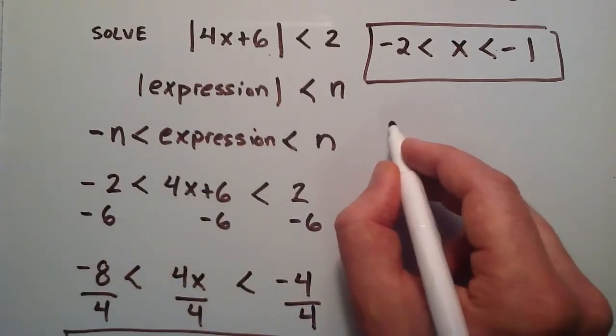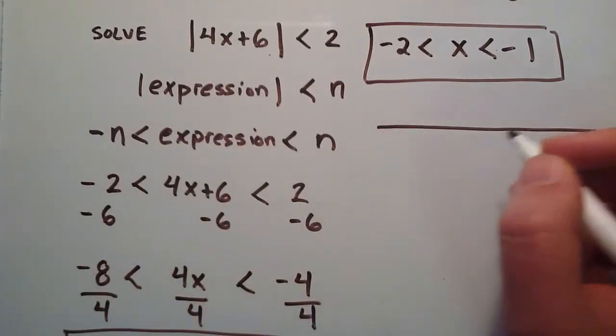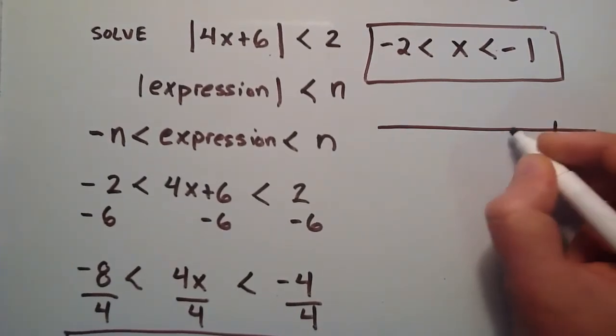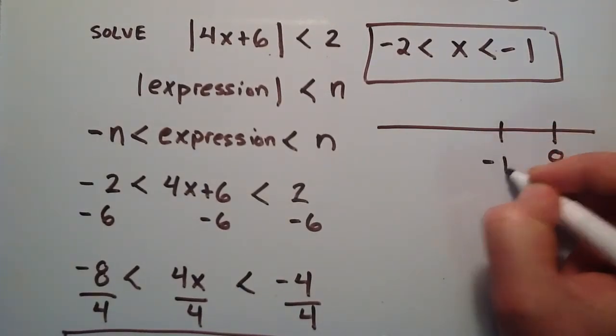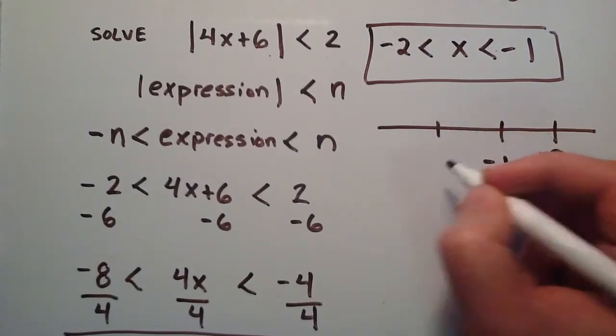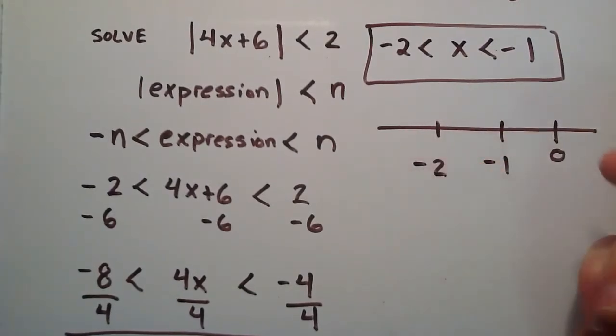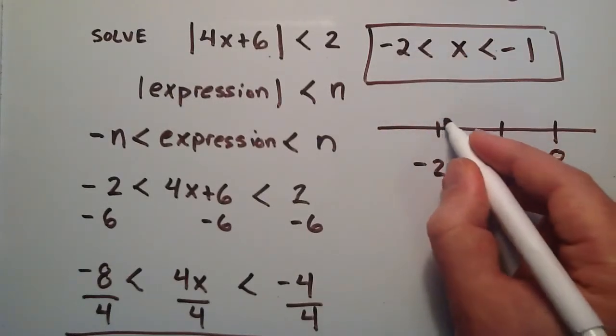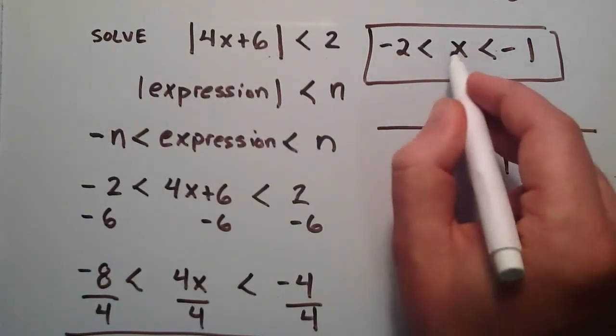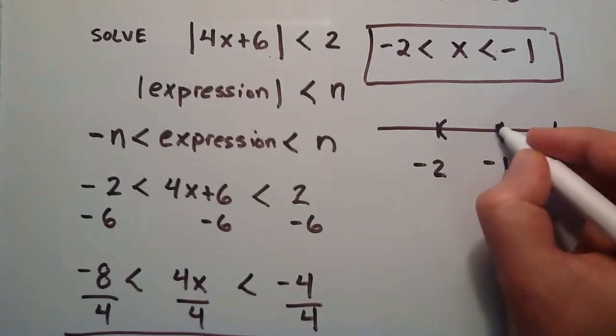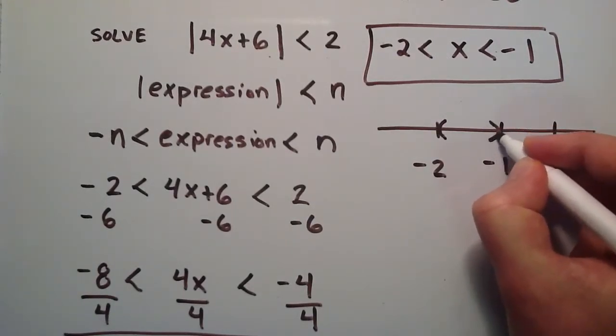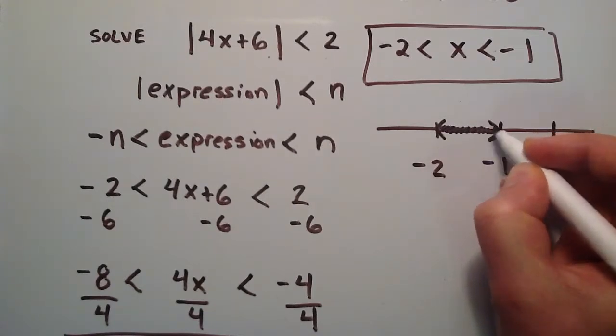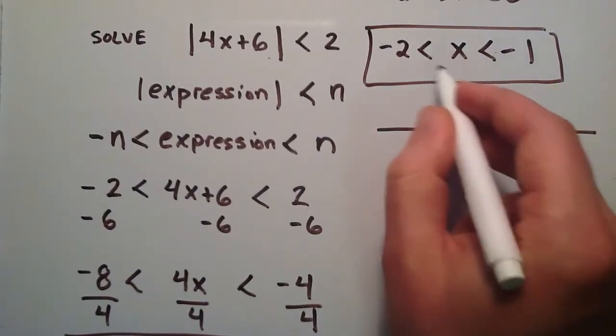Let's plot this on a number line. Here's 0, this is negative 1, and here is negative 2. For this solution, x can be anything greater than negative 2, but it has to be less than negative 1. So it's all this stuff in between. All of these numbers in between satisfy that condition.